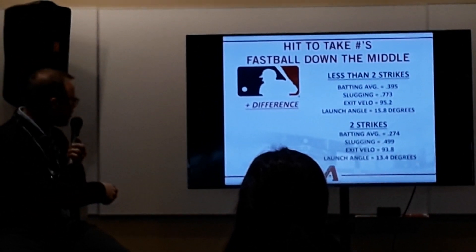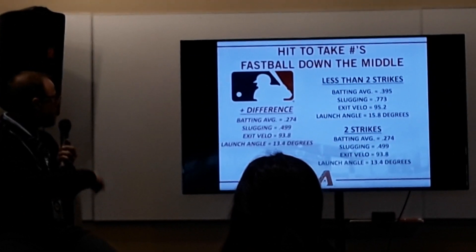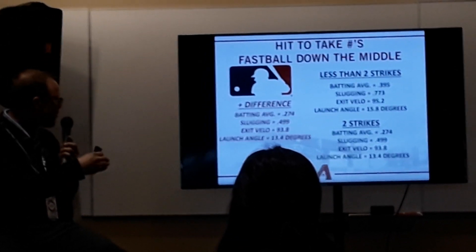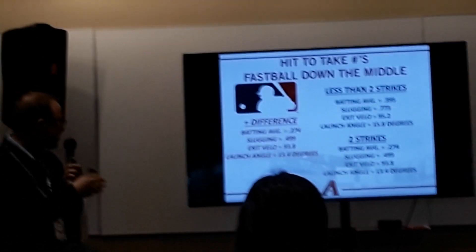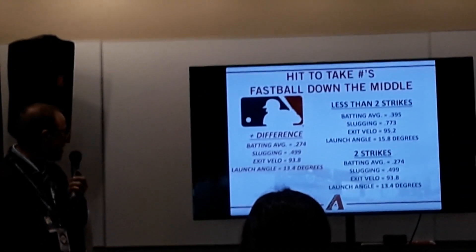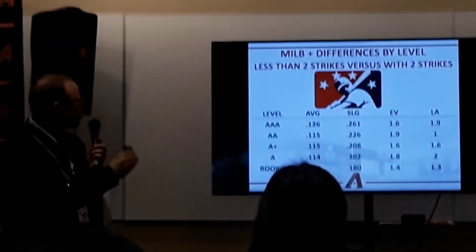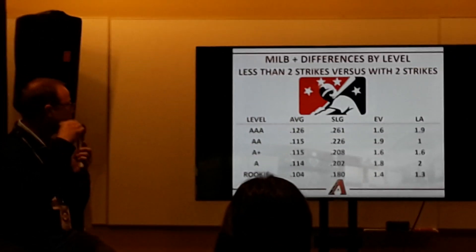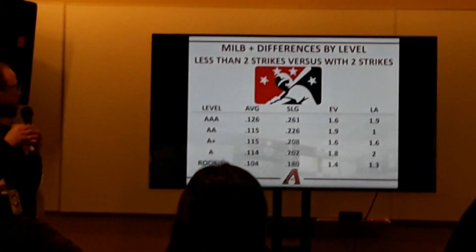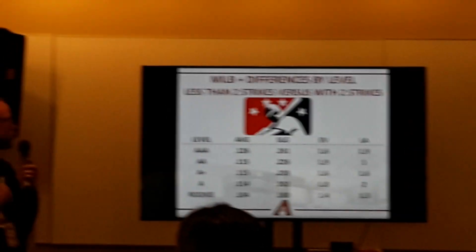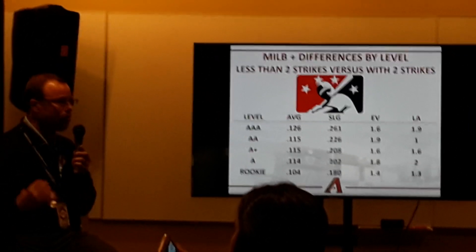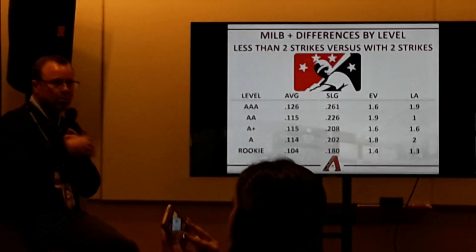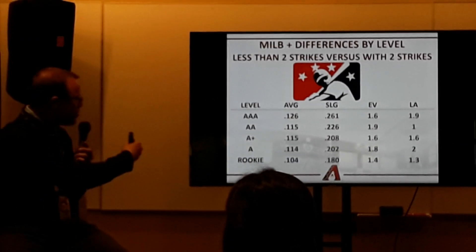So when we look at the difference, it's all positive — .274 batting average, .499 slugging, 93.8 exit velocity, 13.4 launch angle. The numbers are better with less than two strikes. Here's the difference.